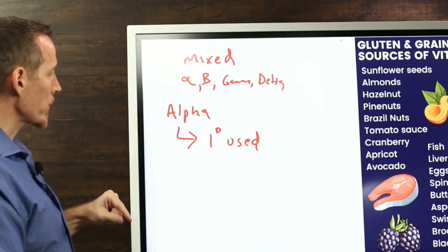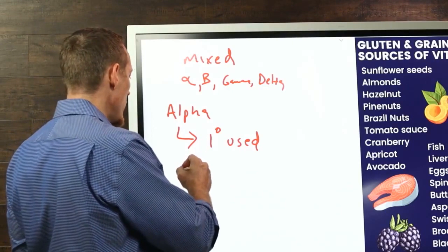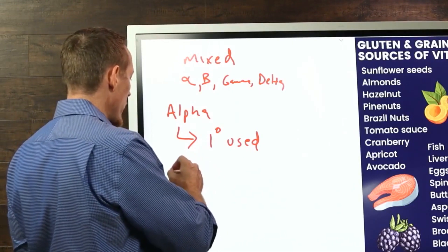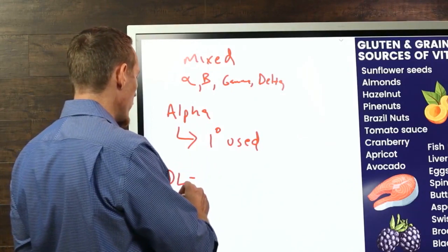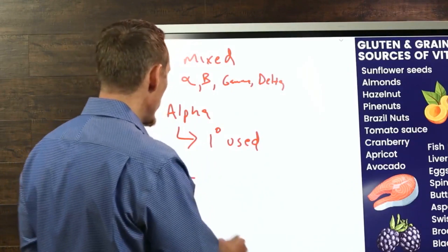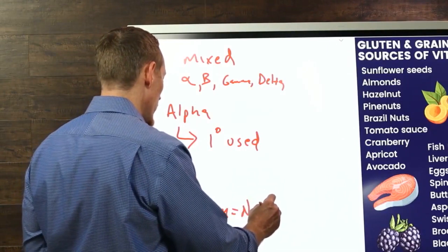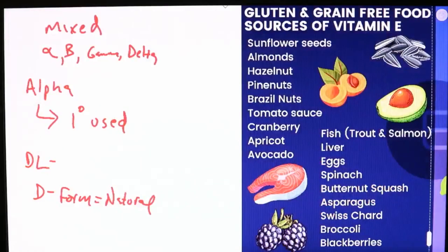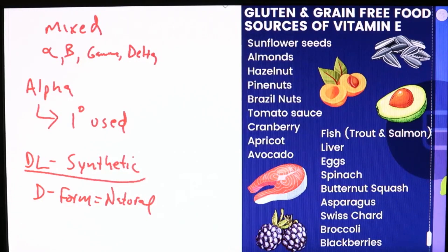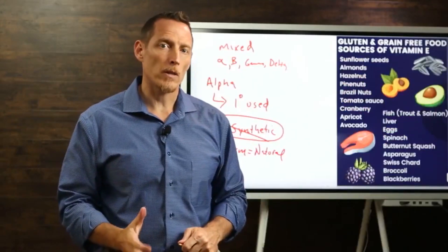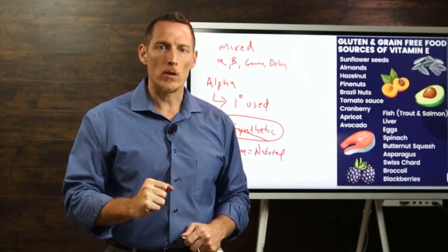It's also important to understand that there's a DL form and a D form of vitamin E. You want the D form — that's the natural version. The synthetic DL form is not as effective; it doesn't work as well as the natural form. So when you're shopping for vitamin E, look for the D version, not the DL synthetic version.